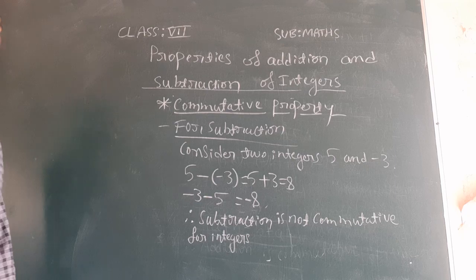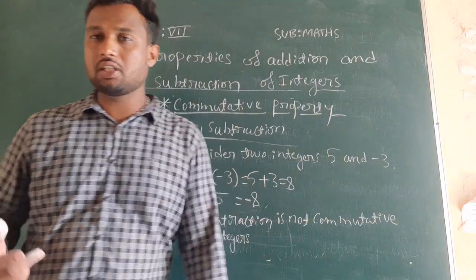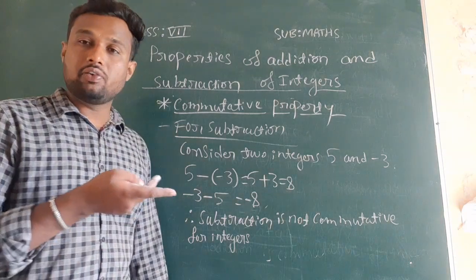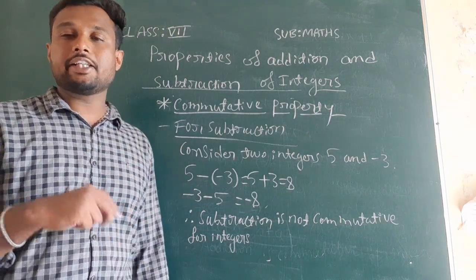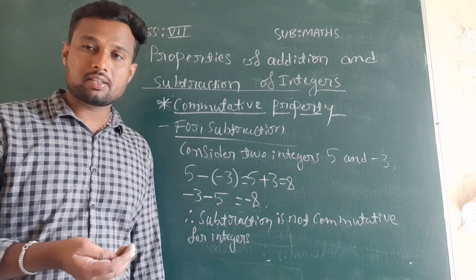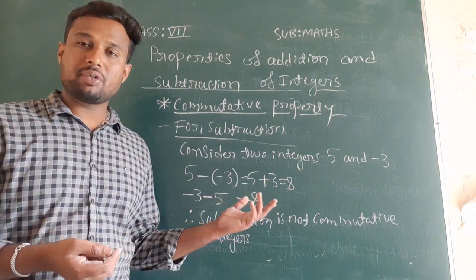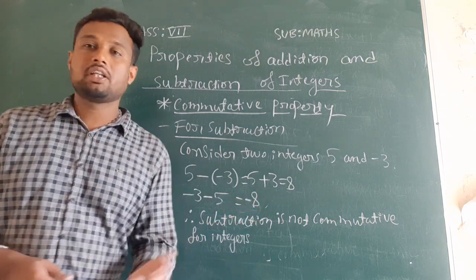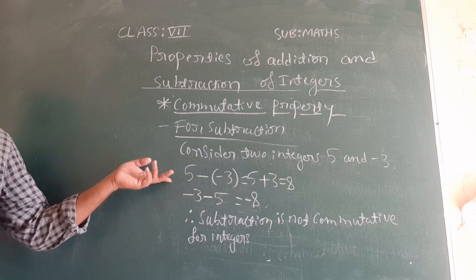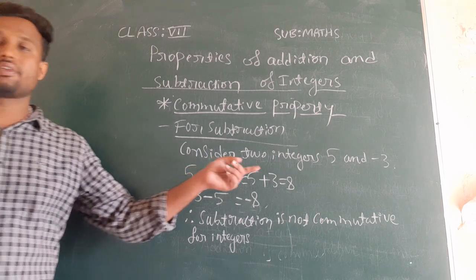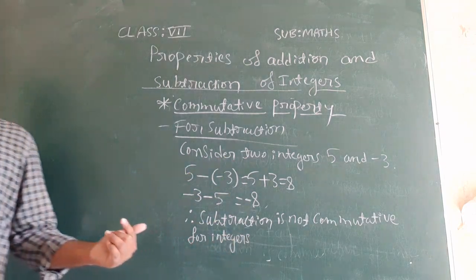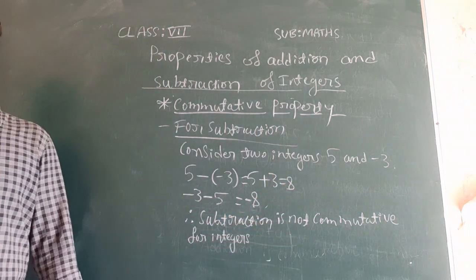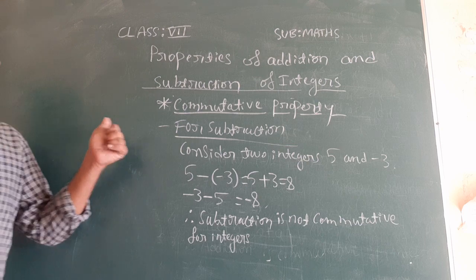Remember: commutative property means when you consider two values a and b, you should get the same answer when you interchange them. For addition, a plus b equals b plus a — you got the same answers. But for subtraction, a minus b is not equal to b minus a. Therefore, subtraction is not commutative for integers.